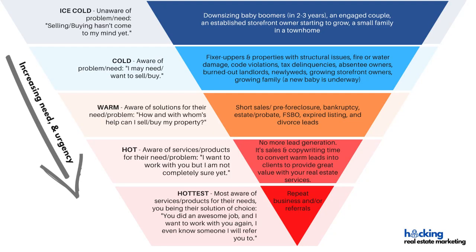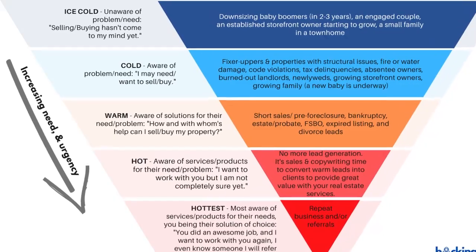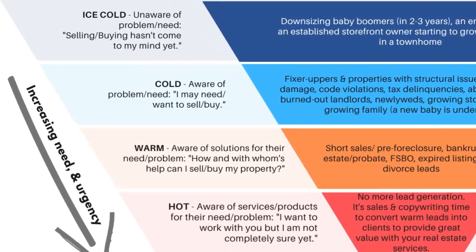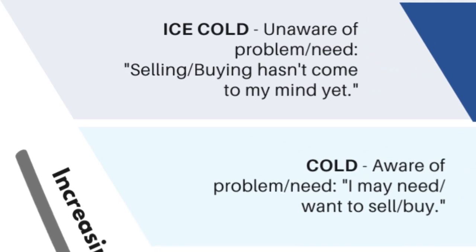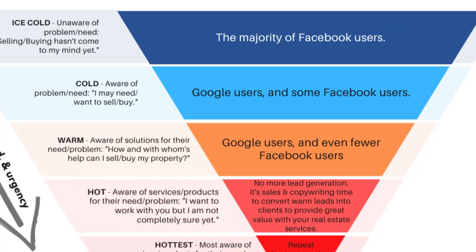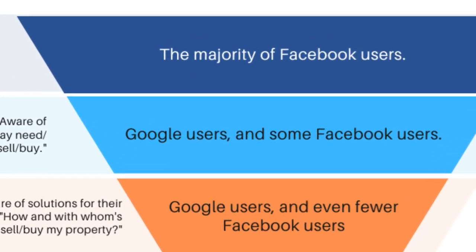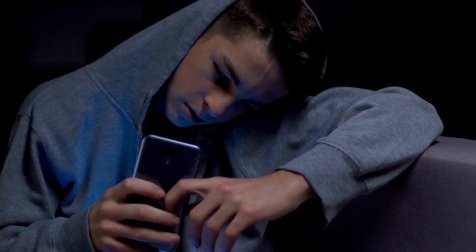I have another cool diagram for you — an inverted pyramid. What I illustrate on this pyramid is how the ideal marketing channels change with each awareness level. First, we have the ice-cold prospect — unaware of their need or problem. They think: 'Selling or buying hasn't come to my mind yet.' This is the majority of Facebook or social media users. It doesn't mean their problems disappear once they enter social media — it's about the state of mind. They want to connect, be entertained, and at most informed — but not sold to. It's about dopamine.